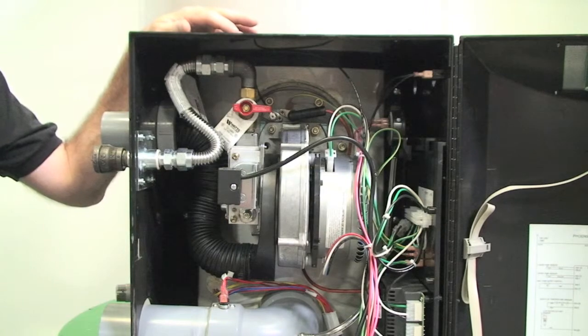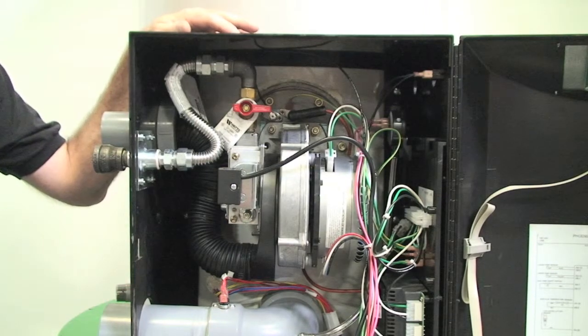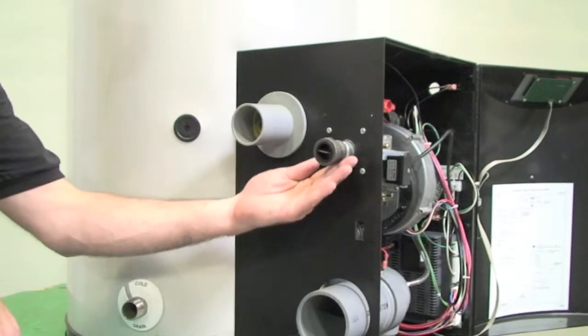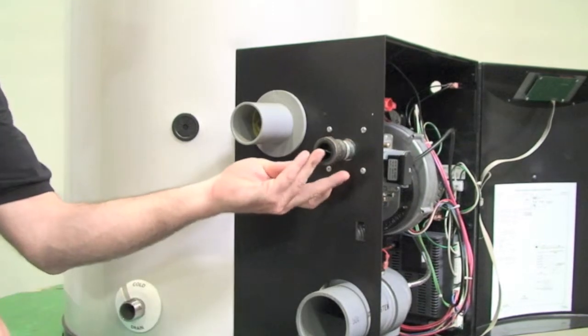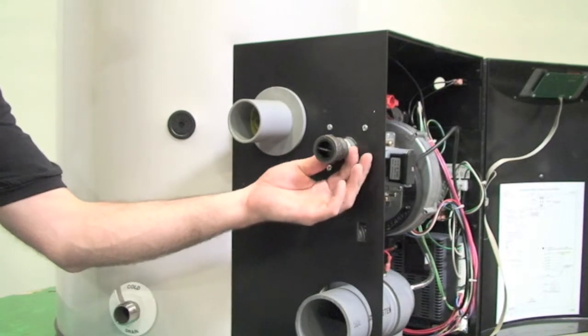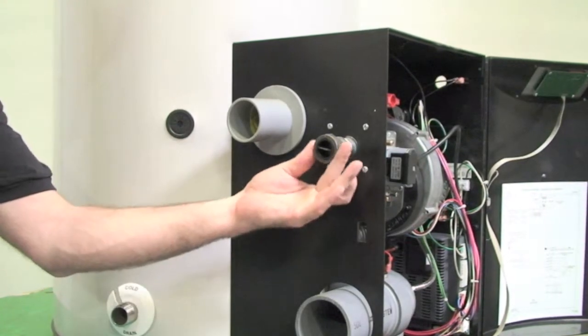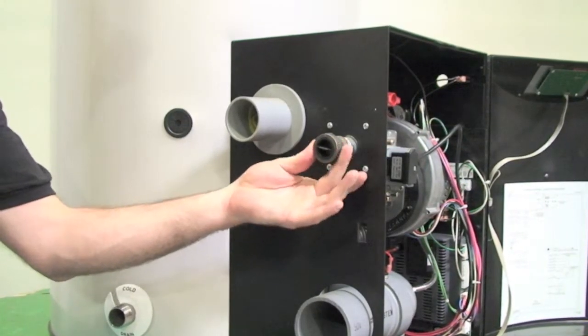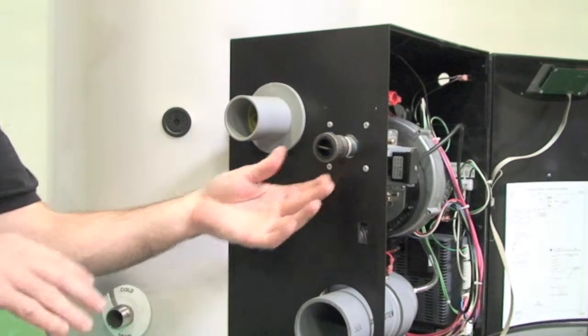And now we're going to talk a little bit about the gas supply piping and some of the crucial points to that. What we have here is our gas supply inlet. It is a three-quarter inch NPT female connection not to be removed. You can also notice that the valve is actually piped in half inch. It is critical that it is piped with three-quarter. The reason for this is a reason for volume.